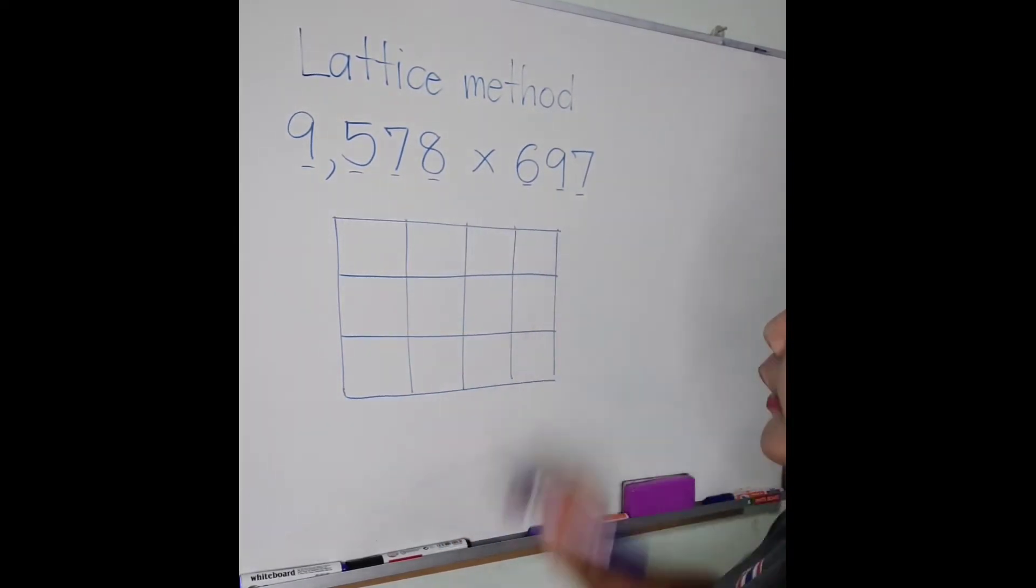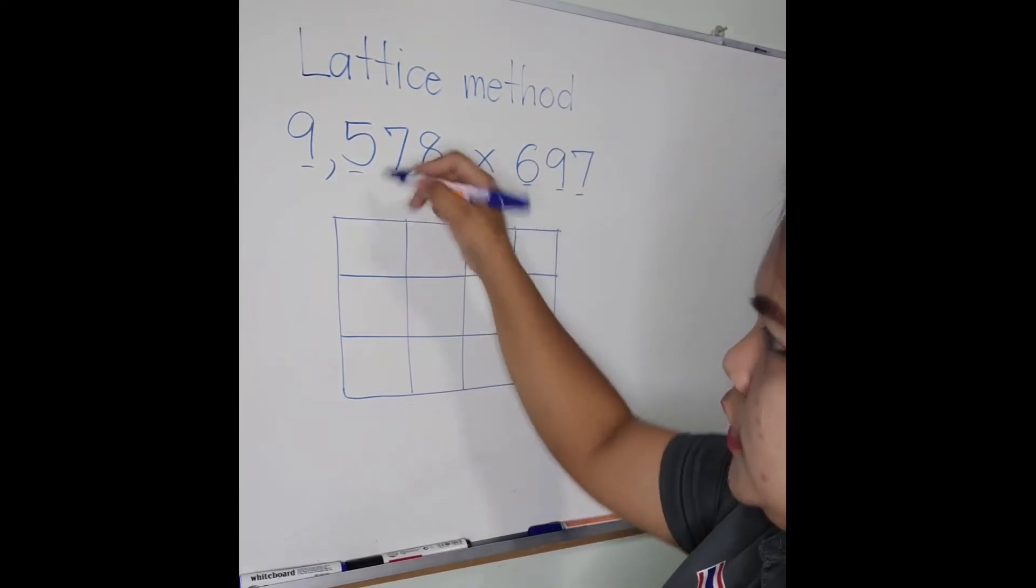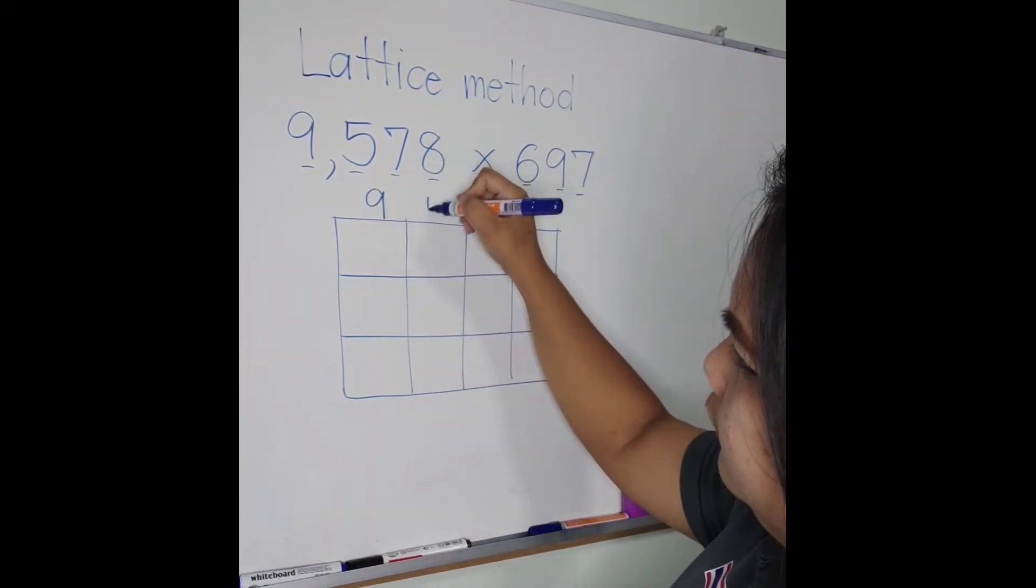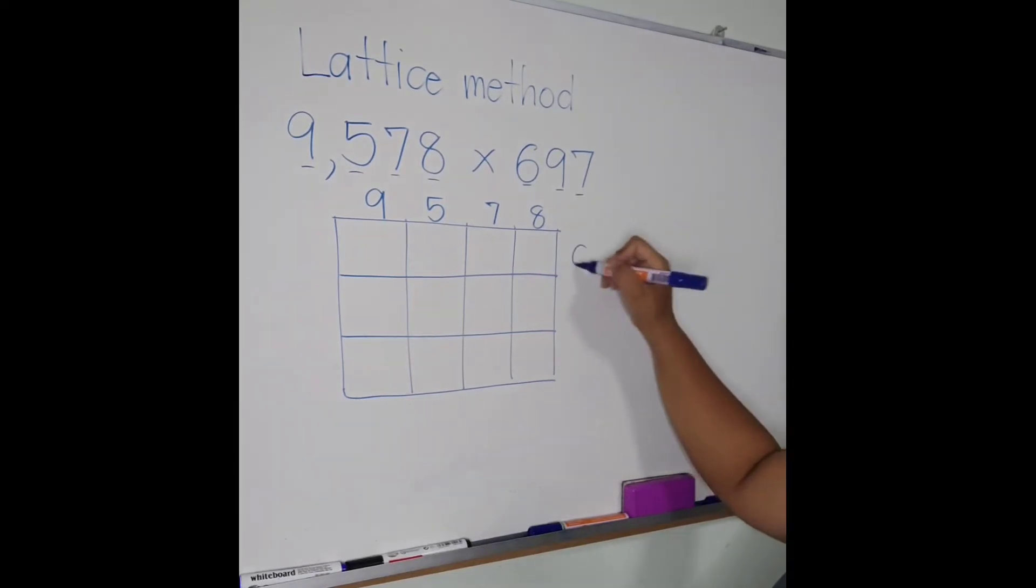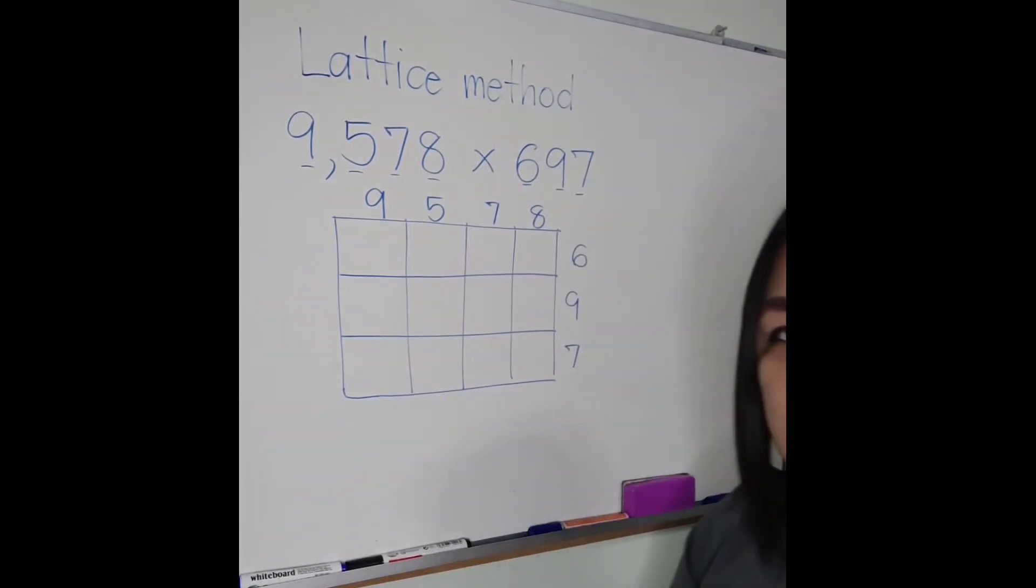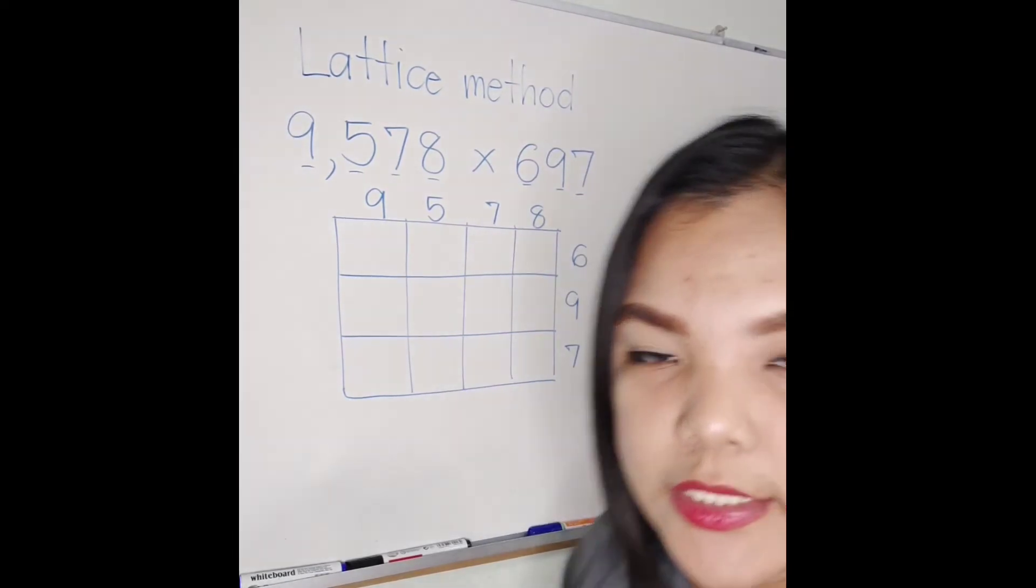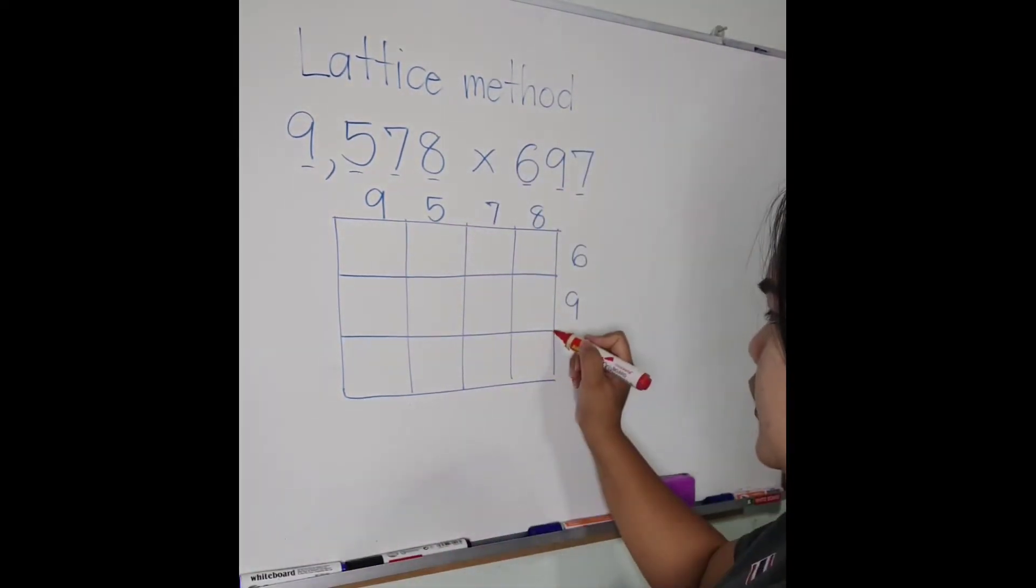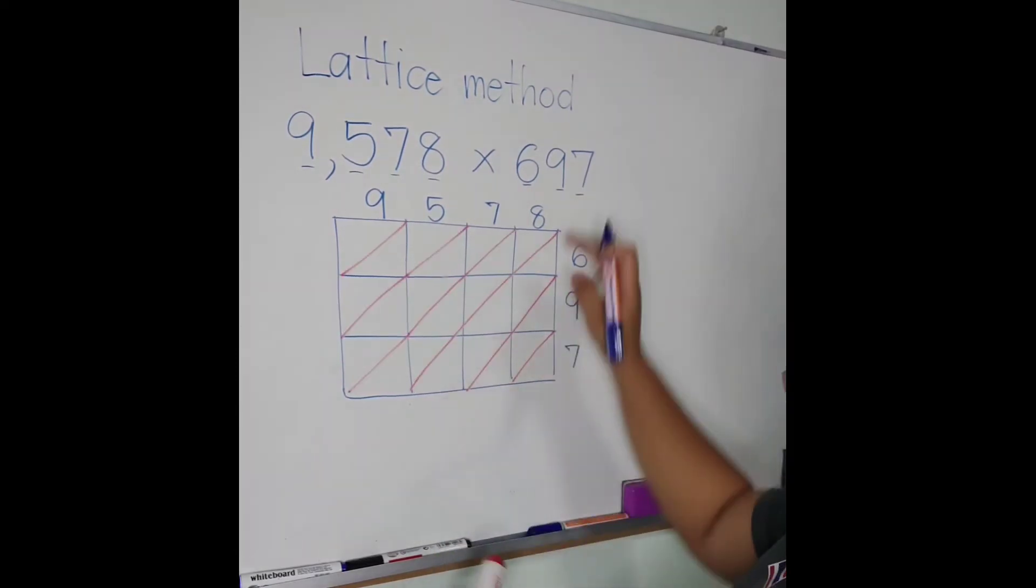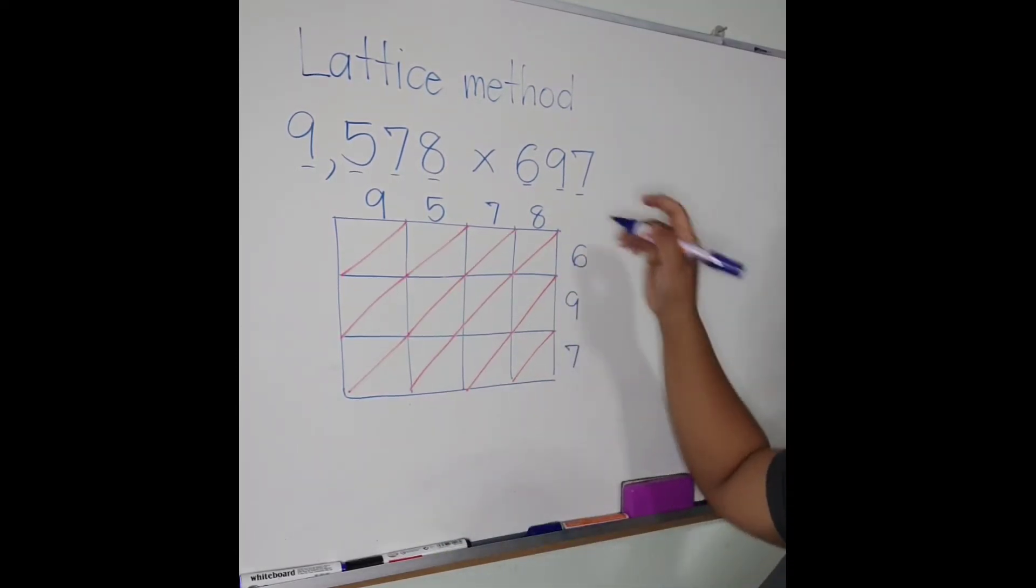Okay, next, write all the digits: 9, 5, 7, 8, and here 6, 9, 7. Next step, yes correct, you are going to make diagonal lines. So draw diagonal lines. Column times row, that is the step, column times row.